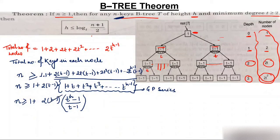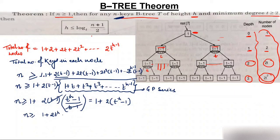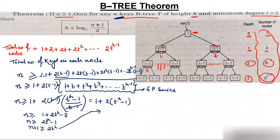Multiplying through, the (t−1) terms cancel, leaving: 1 + 2(t^h − 1) ≤ n. Simplifying: 1 + 2t^h − 2 ≤ n, so n ≥ 2t^h − 1, meaning n+1 ≥ 2t^h. Therefore t^h ≤ (n+1)/2.